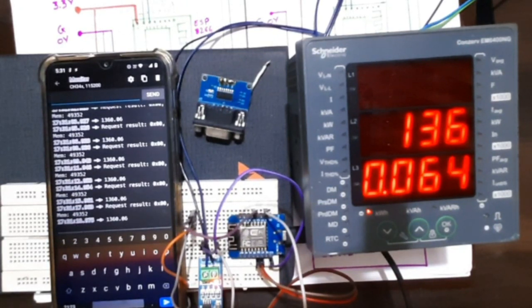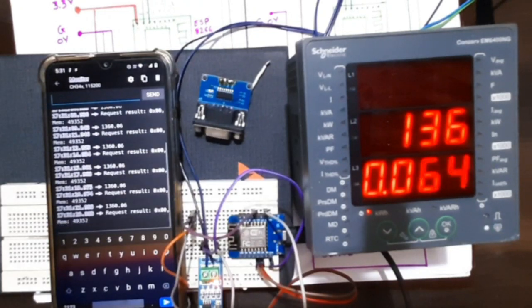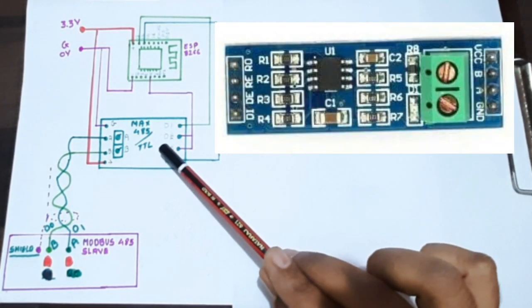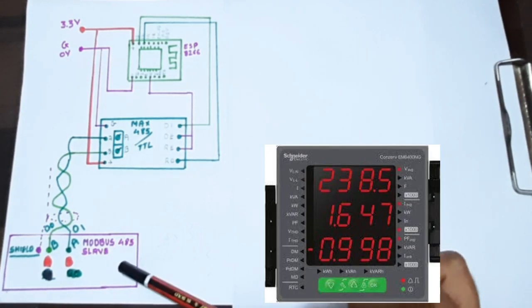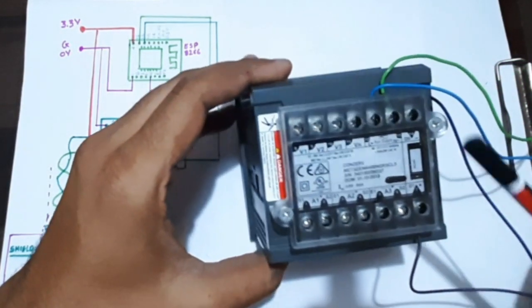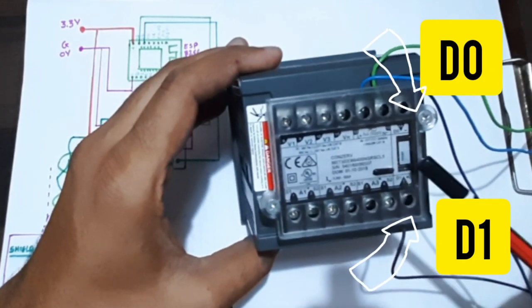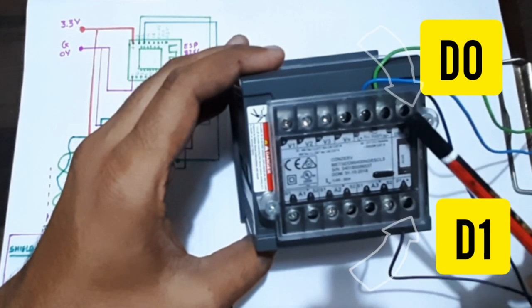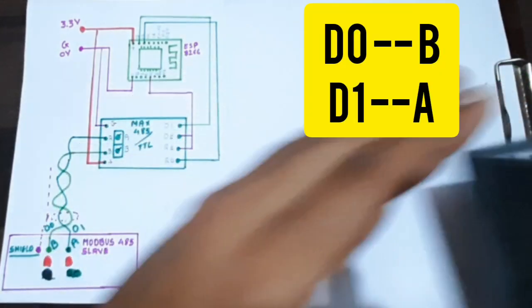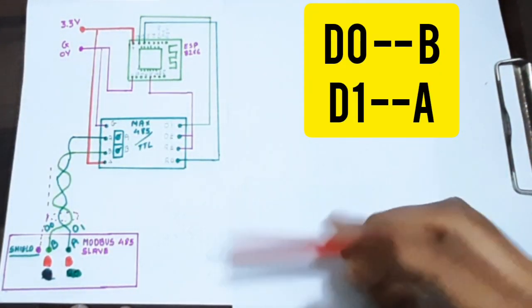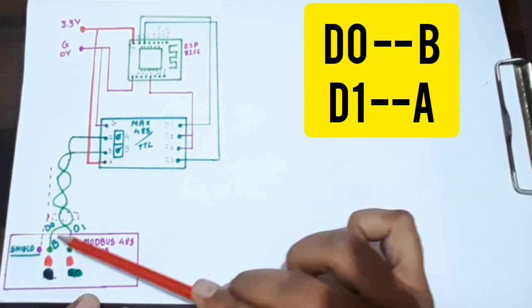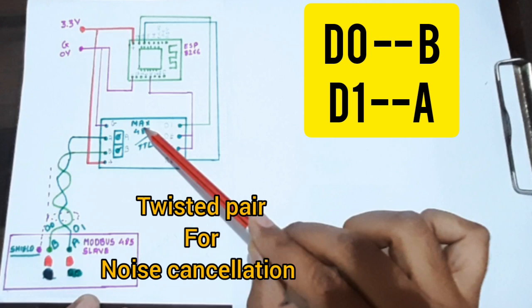Before jumping into the code, let me explain some Modbus protocol related information. Here is the schematic diagram — this one is the ESP8266 module, this one is the MAX485 TTL converter, and this one is the Consomek EM6400 energy meter. Let me show the Modbus connection on the energy meter. You can see the D0 and D1 connections which are mentioned as RS485 terminals. Using these two connections we can read all the data of this energy meter. D0 is considered as B and D1 is considered as A.